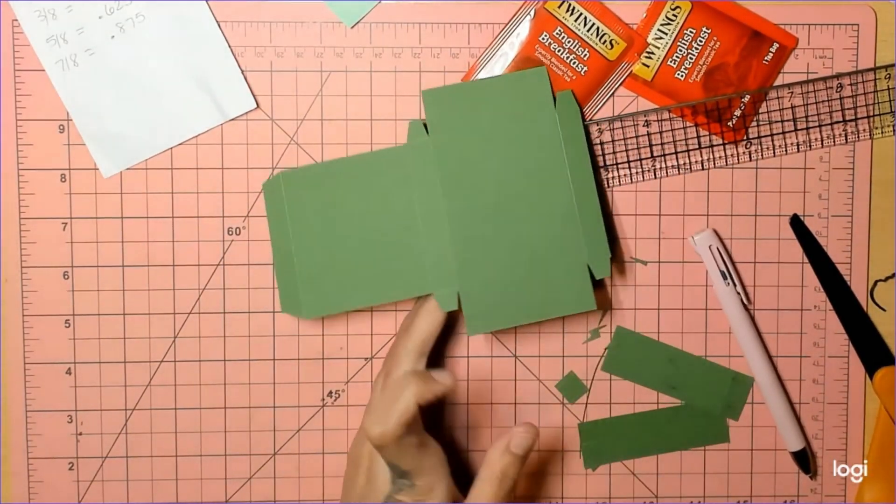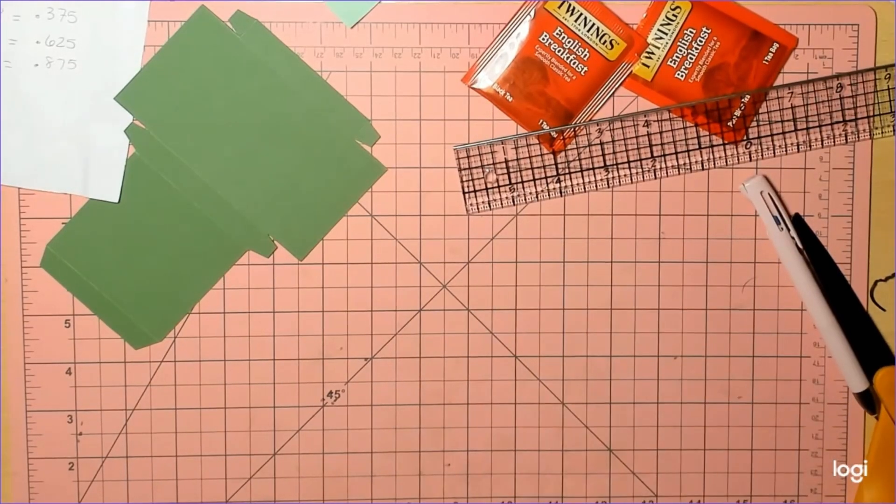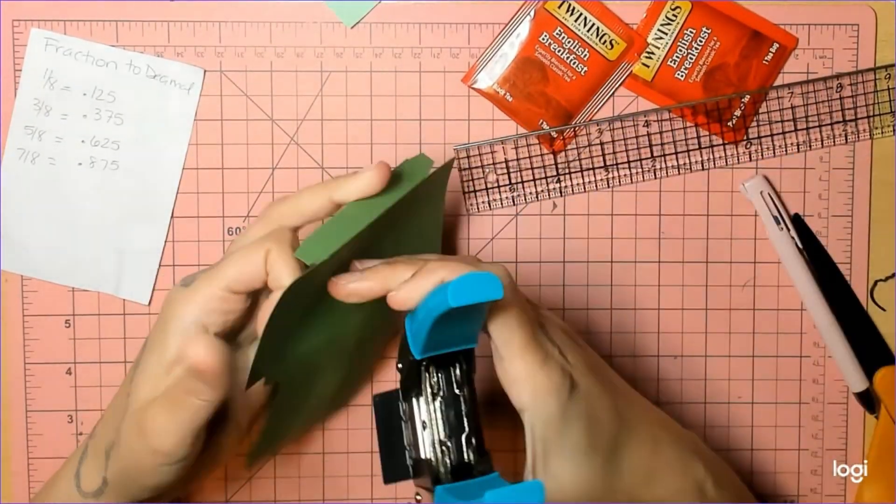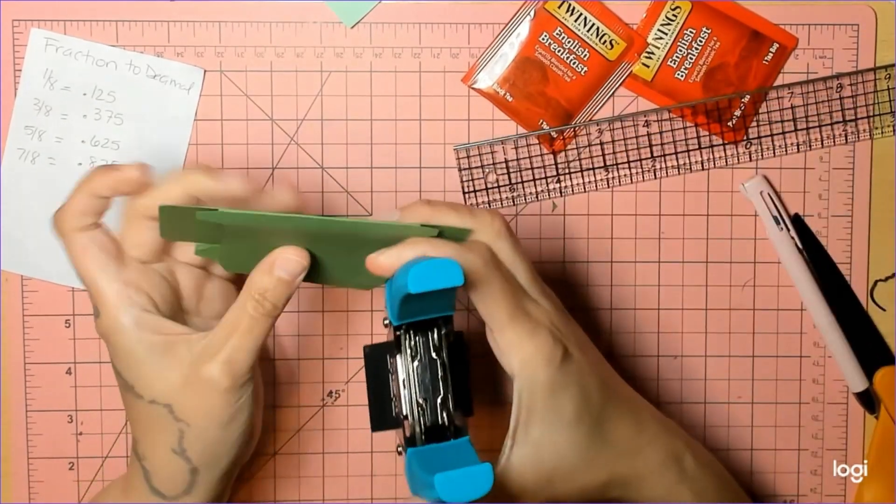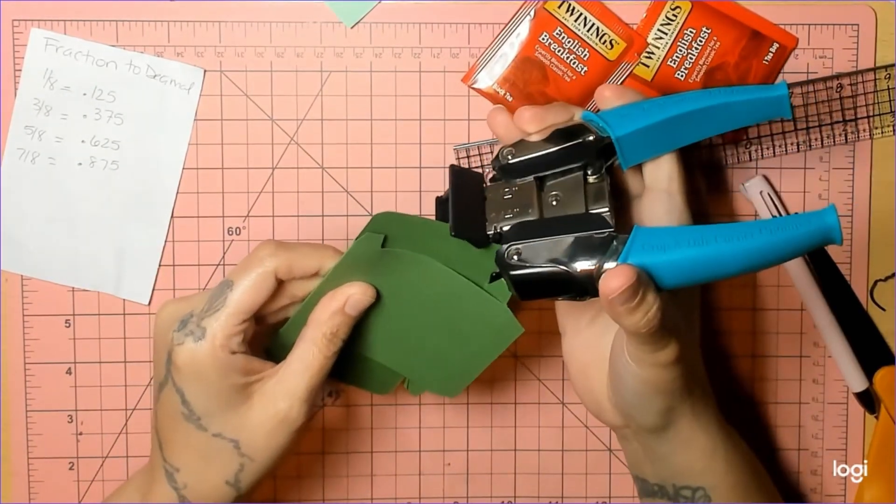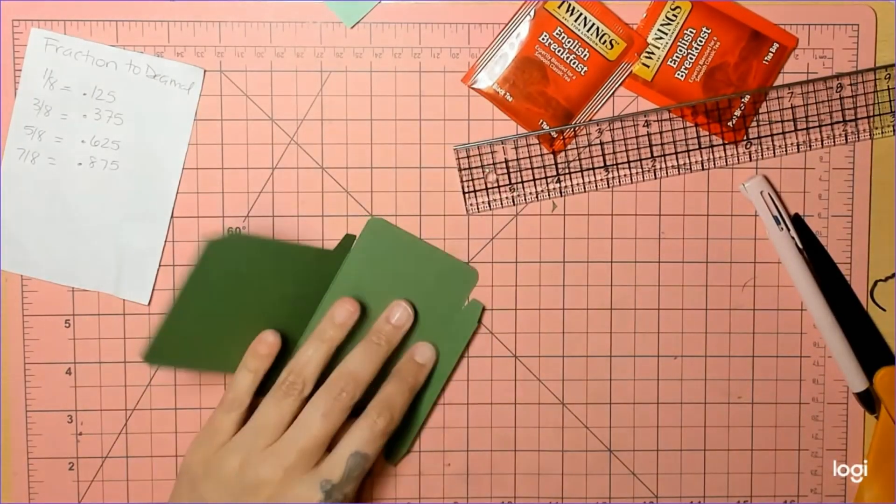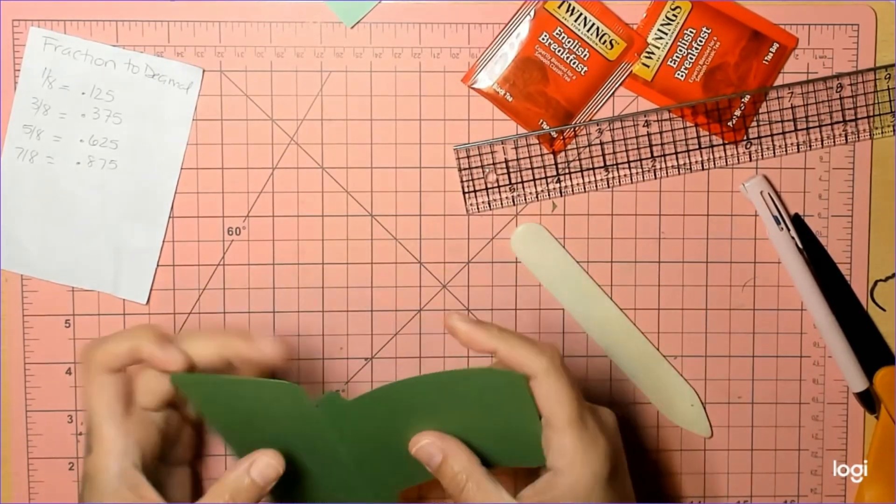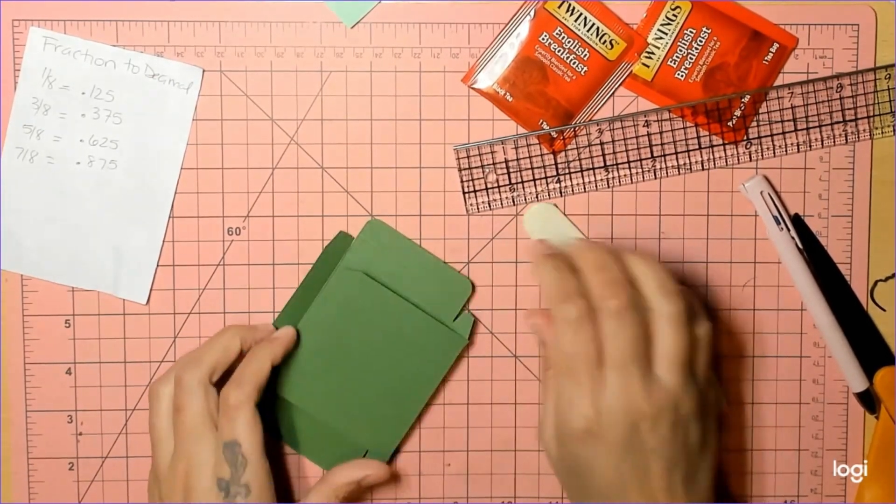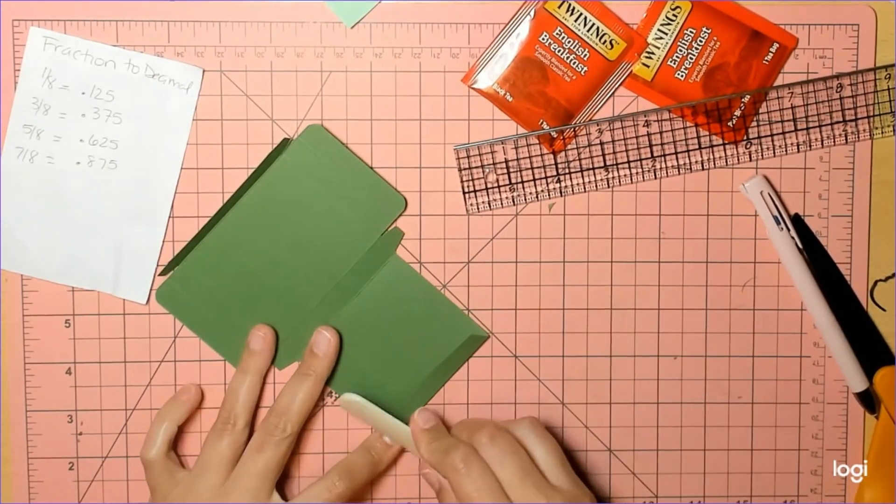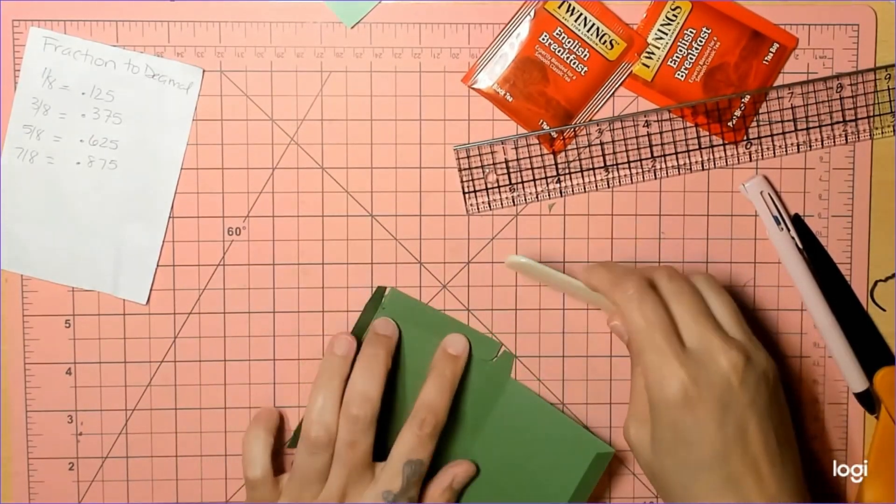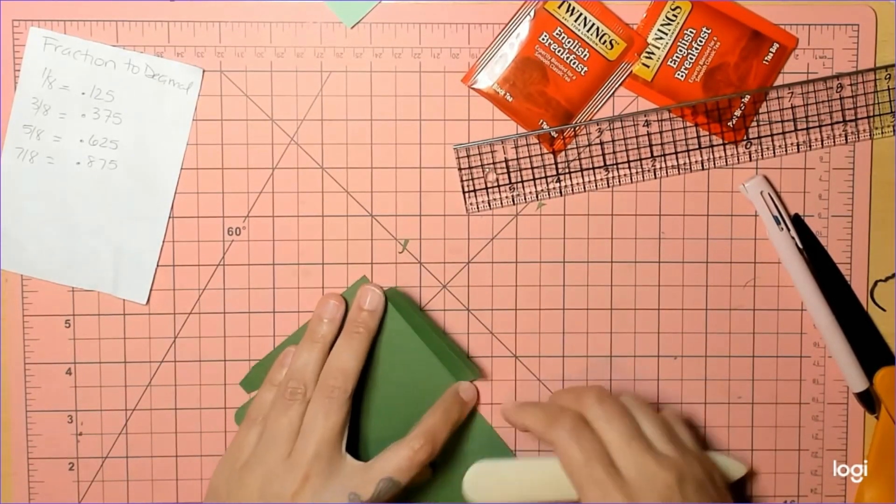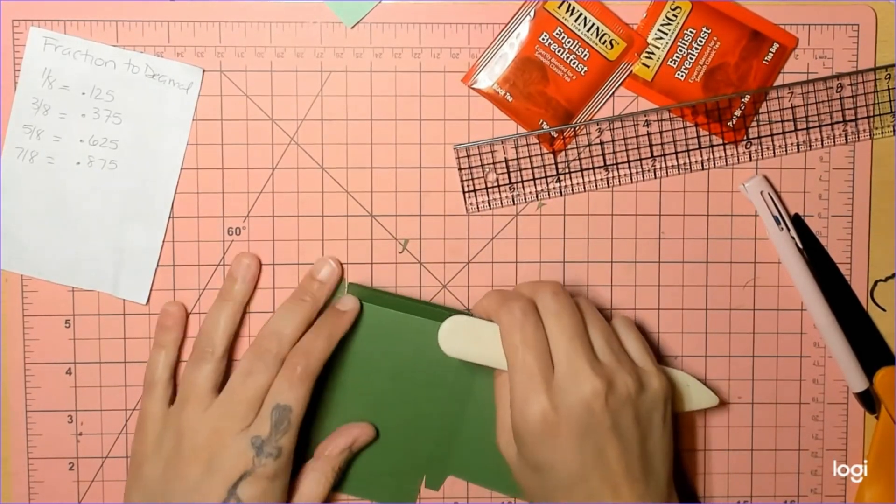Corner rounder—round your corners in the middle panel there, whatever corner rounder you have. Go ahead and get your bone folder and burnish your lines if you haven't already done that. What is going to make this so easy and cost-efficient is that we're going to go ahead and just stamp a background and we're going to punch out a shamrock.